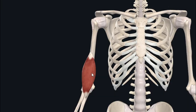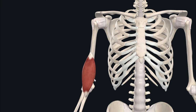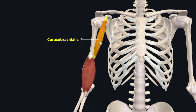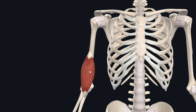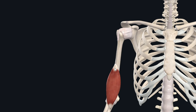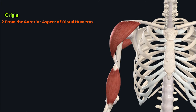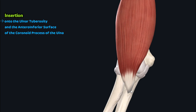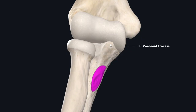The third and last muscle of the anterior compartment of arm is the brachialis. It lies just medial to the coracobrachialis and deep to the biceps brachii, and is the strongest flexor of the forearm, connecting the distal arm to the forearm. This muscle originates from the anterior aspect of the distal humerus, near the insertion of the deltoid, and inserts onto the ulnar tuberosity and the anterior inferior surface of the coronoid process of the ulna.